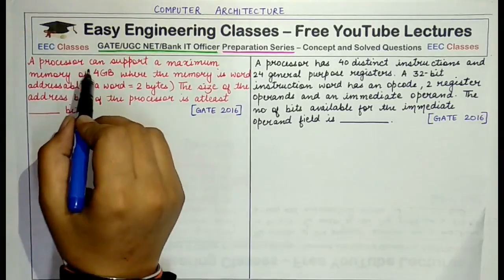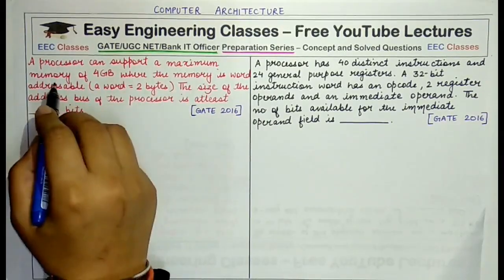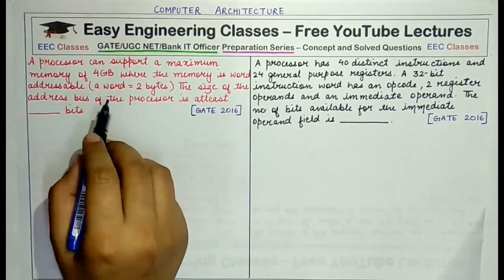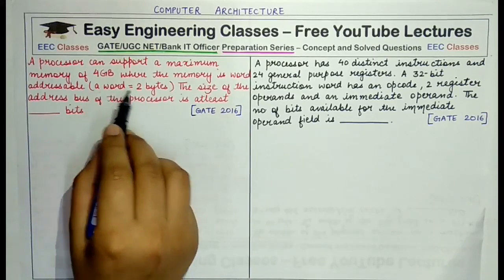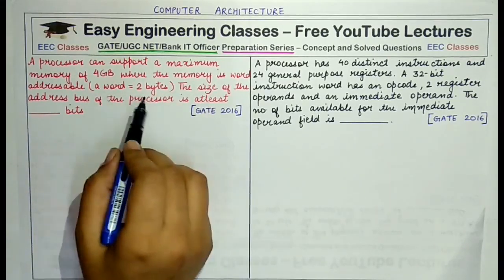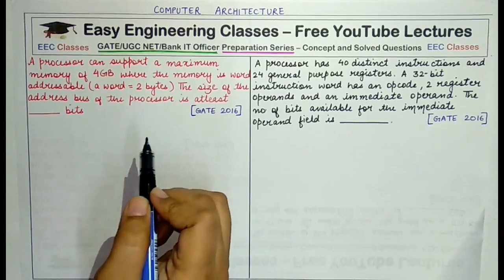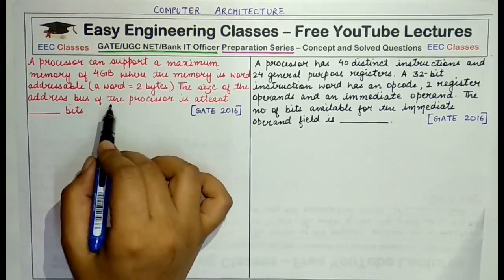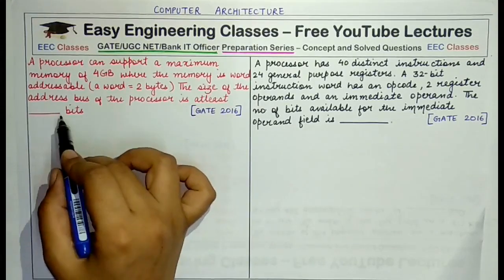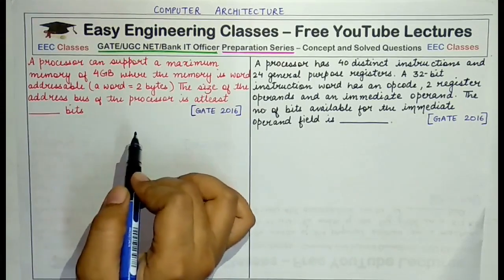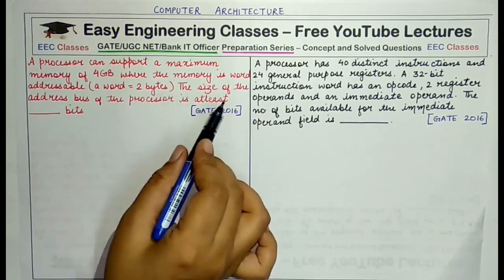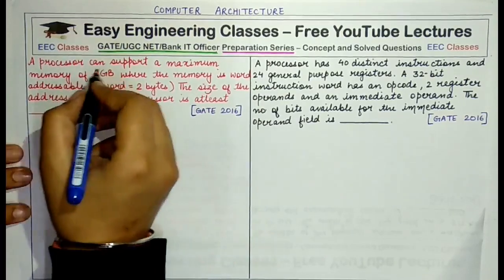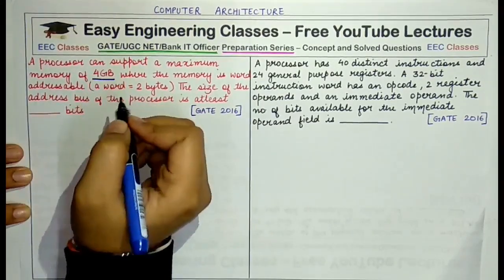A processor can support a maximum memory of 4 GB where the memory is word addressable. Word addressable means here a word has two bytes. So in this question, whenever you refer to a word it represents two bytes. The size of the address bus of the processor is at least how many bits — it is a numerical type of question in which you have to find out the size of the address bus, and there are no options given.